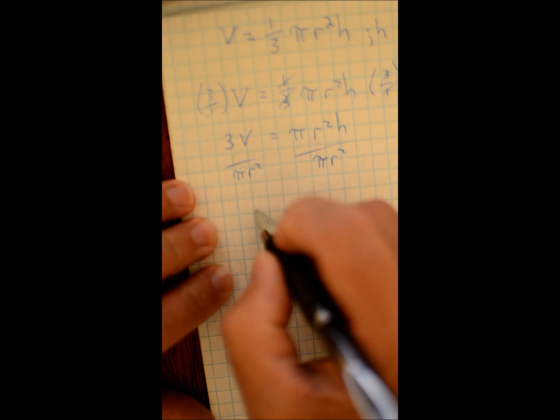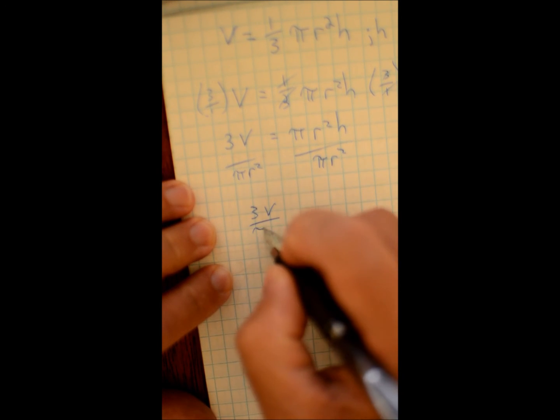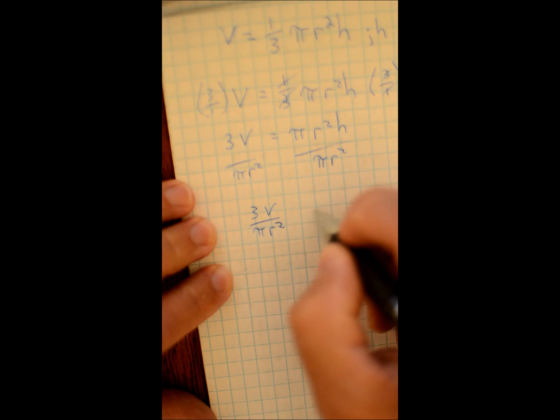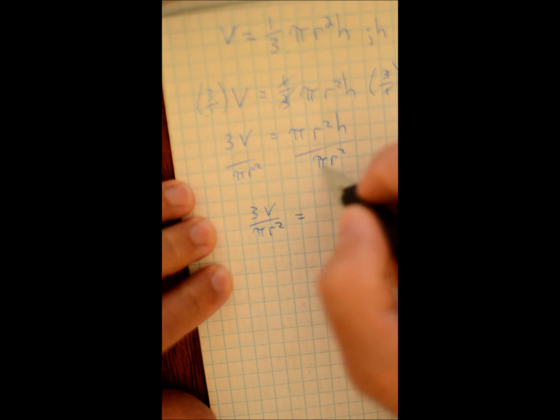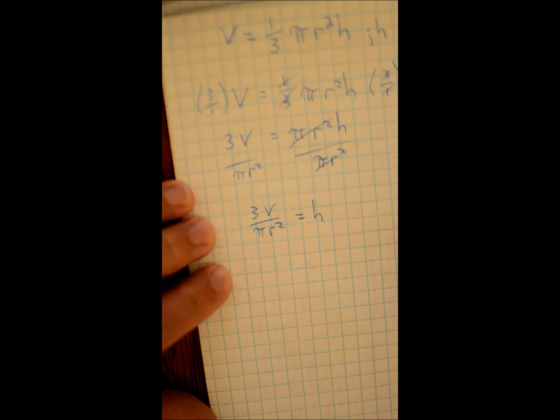Which leaves us with, kind of what we have there, three v over pi r squared is equal to, all this turns into a one, which is equal to h.